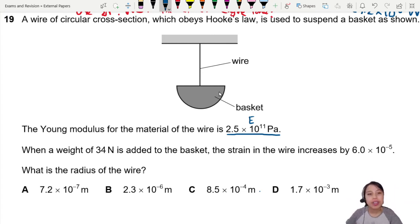When a weight is added to the basket - now you're throwing some fruits - the strain increases by 6×10^-5. So this is a change in strain. Young's modulus is usually calculated by stress over strain. Here you have an increase in strain. I just wrote stress, my bad - change in strain.